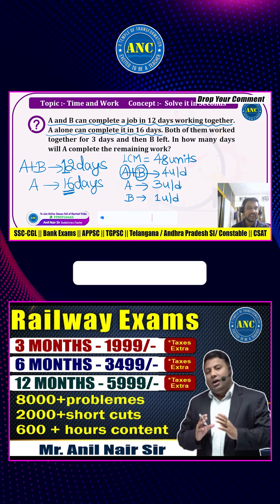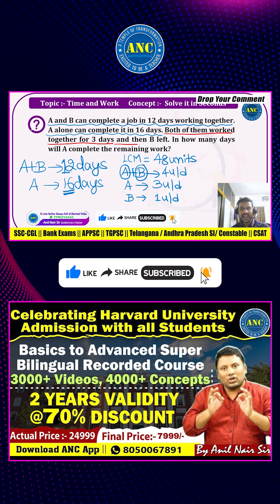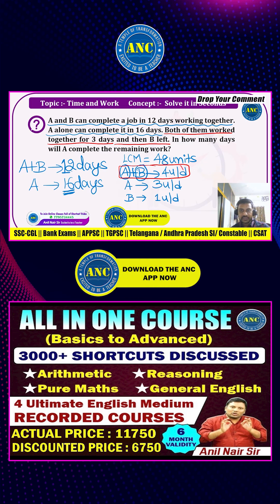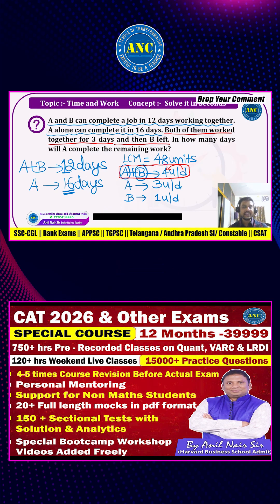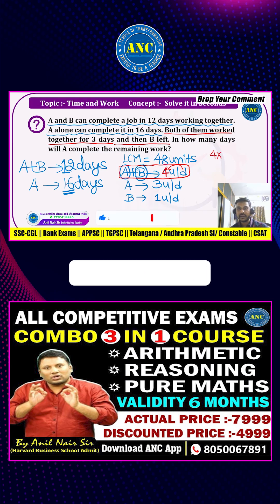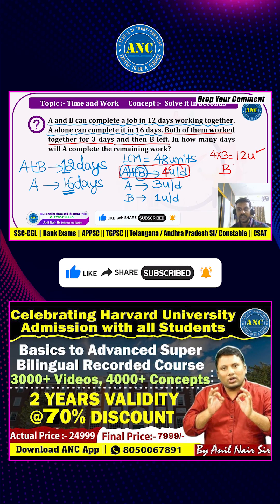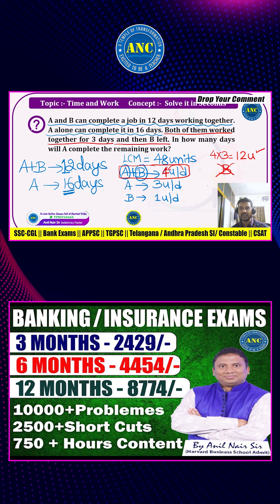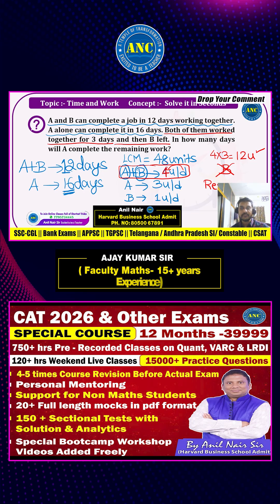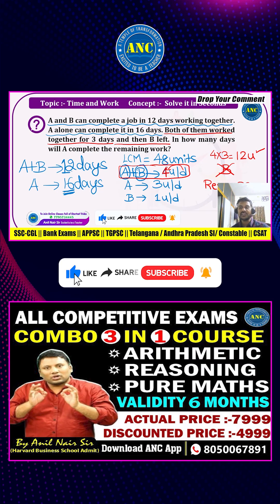Now see the next statement given in the question: both of them worked together for 3 days and then B left. When both are working together, in one day they can distribute 4 chocolates. So in 3 days they can distribute 4 into 3, which is 12 chocolates. So 3 days are completed and 12 chocolates are completed.